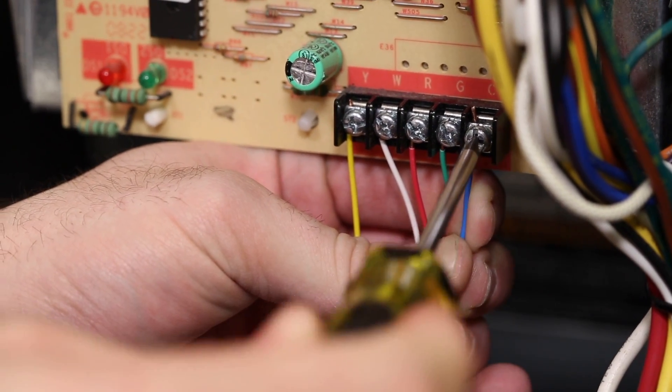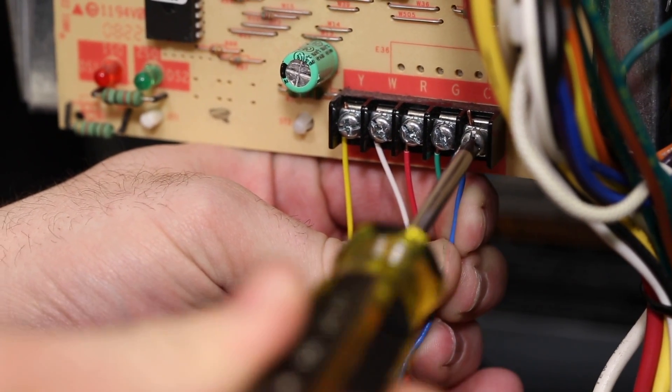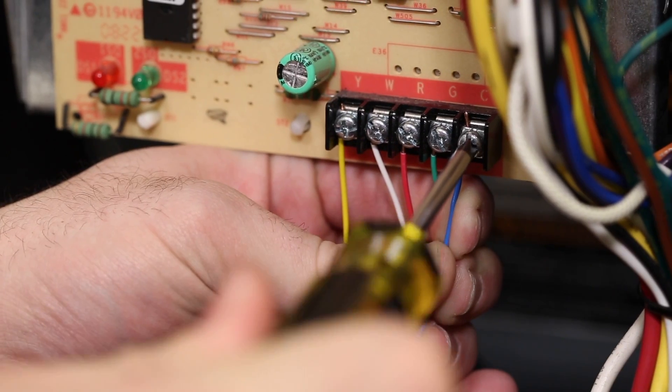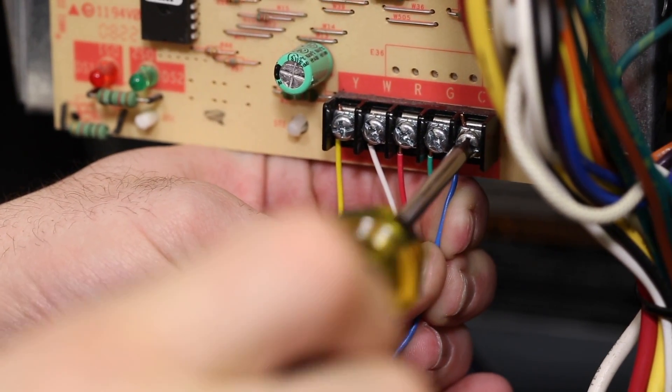Your control board may be a little different, so take a look at how your other terminal wires are attached and secure this new wire to the C terminal the same way.